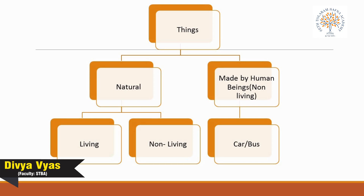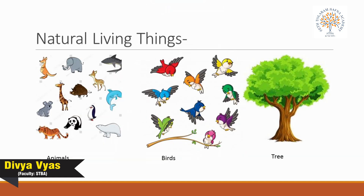Natural things again are of two kinds: first, living things, and second, non-living things. Some natural things can breathe, move, grow, and do many other things that other natural things cannot do. This is because some natural things have life while others do not.